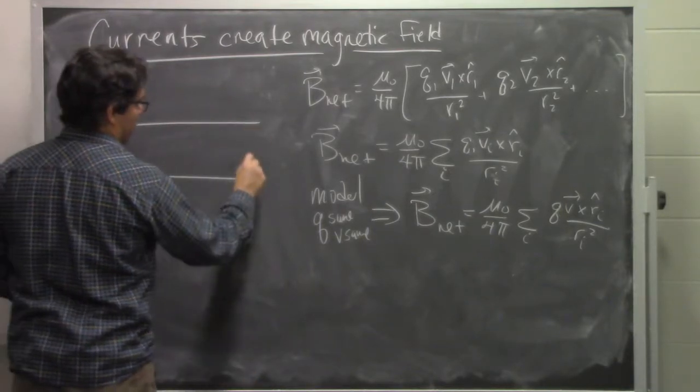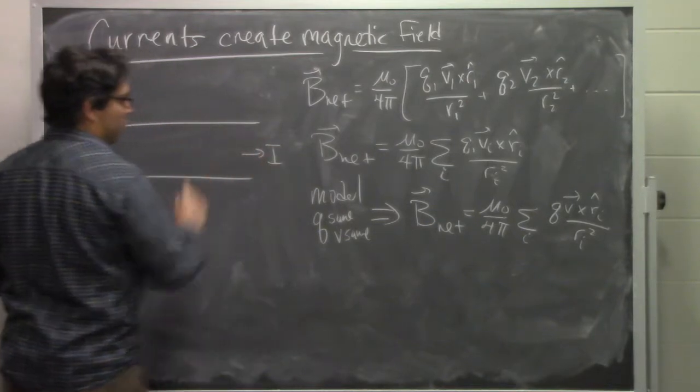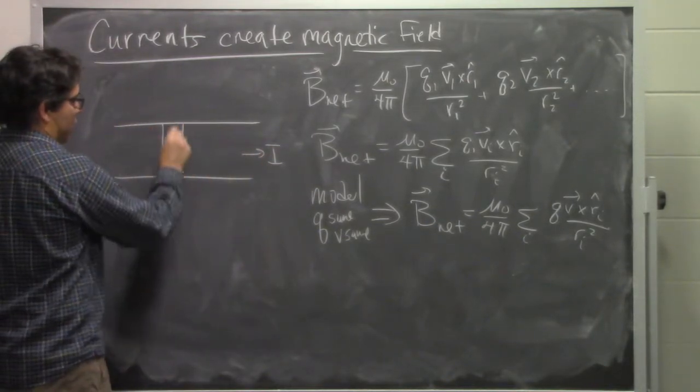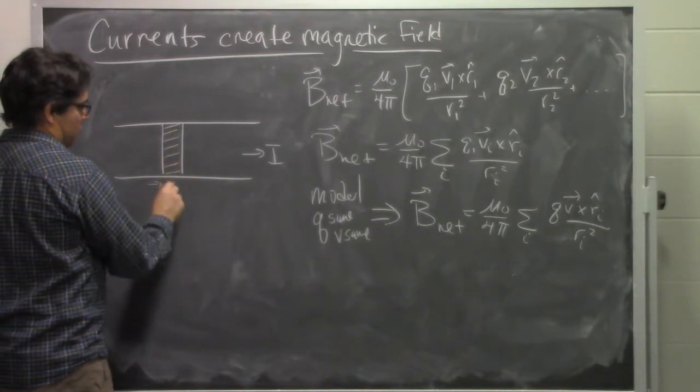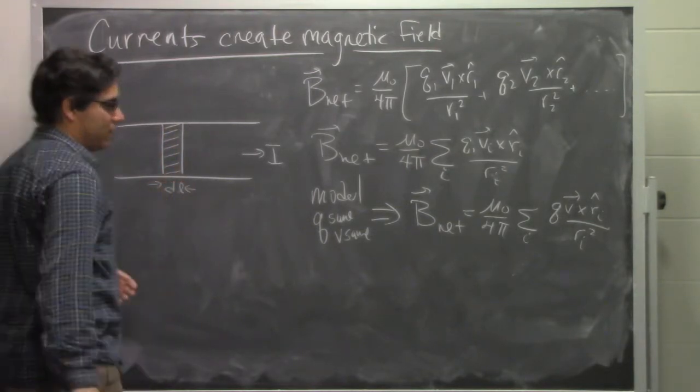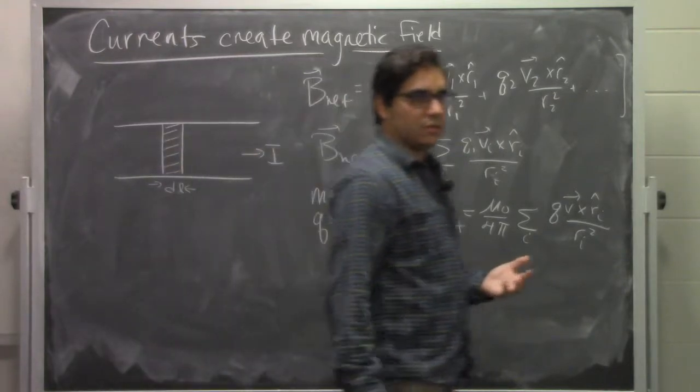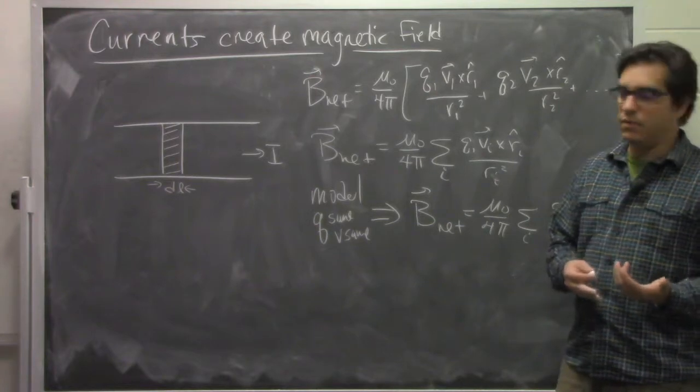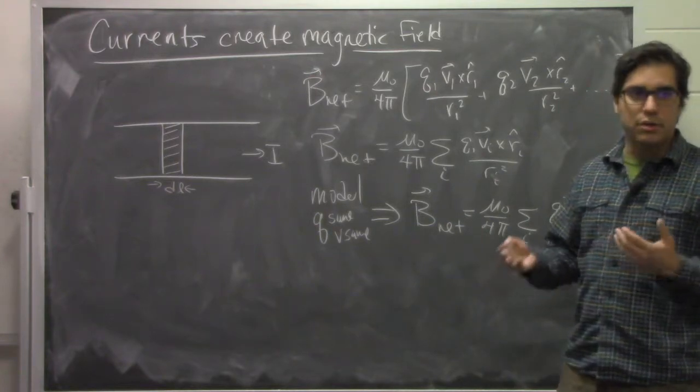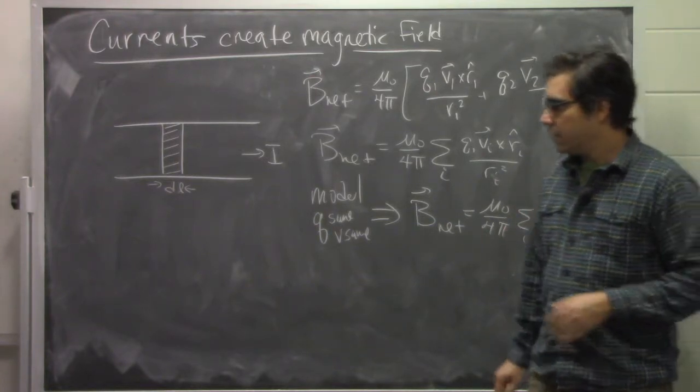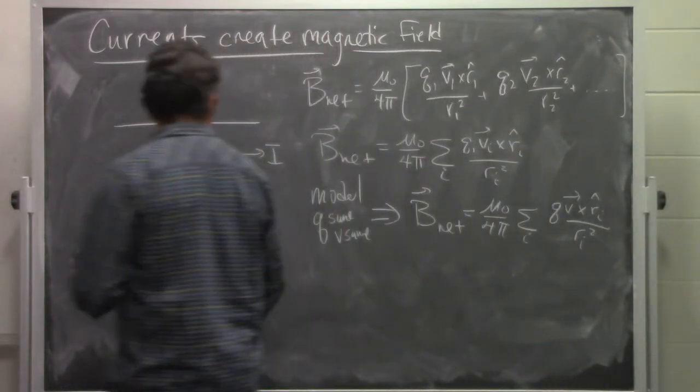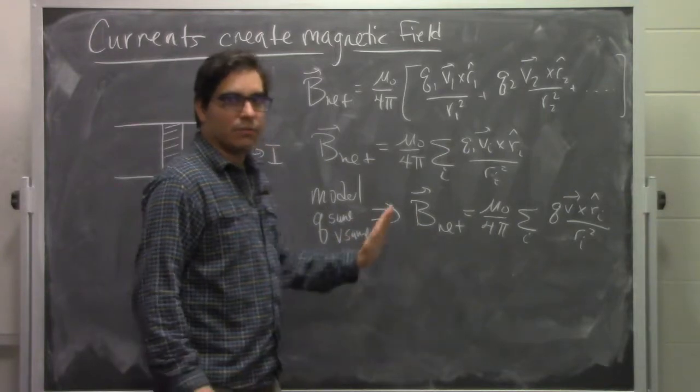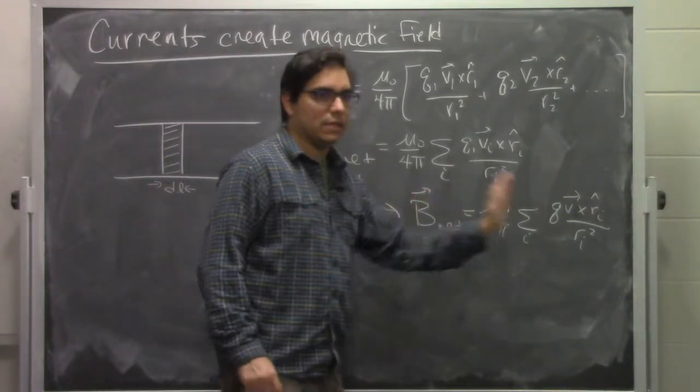We're going to say instead what we have is some current that moves along the wire. We'll cut up a little piece of that wire to have some thickness DL. If the charges themselves are moving with a speed V, then we can relate that speed V and the amount of charge to the current and this space.